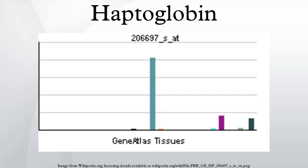Haptoglobin level is used to determine whether hematology needs to be consulted for hemolytic anemia. This gene encodes a preproprotein that is processed to yield both alpha and beta chains, which subsequently combine as a tetramer to produce haptoglobin.